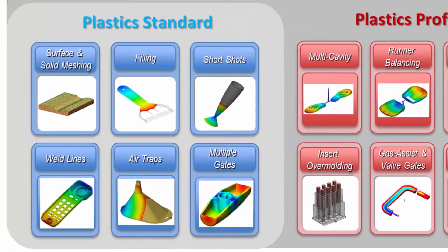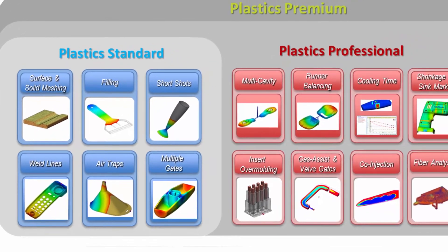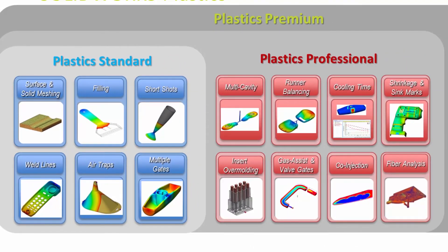SOLIDWORKS Plastics comes in three versions. Plastics Standard is for the part designer and provides all the tools necessary to test and optimize your designs for injection molding. Plastics Professional builds on the capabilities of Standard and provides additional tools for the mold maker, allowing you to analyze single cavity, multi-cavity, and family mold layouts with sprues, runners, and gates.